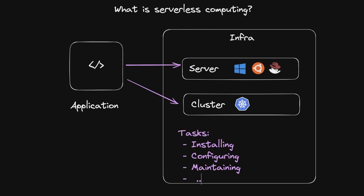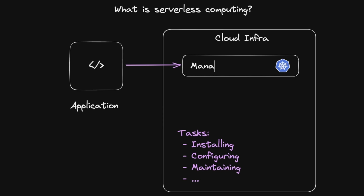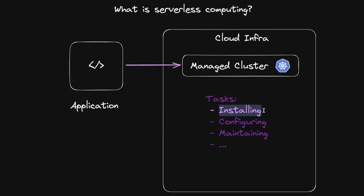Regardless of the setup, the application needs to run somewhere on an infrastructure which you are responsible for installing, configuring and maintaining. Typically that would involve things like installing an operating system, installing packages and running updates. But even if you are using cloud providers with some managed services or container orchestration, that takes away some of the burden from you, but there is still a significant amount of work required to ensure everything is operational and scales as needed.